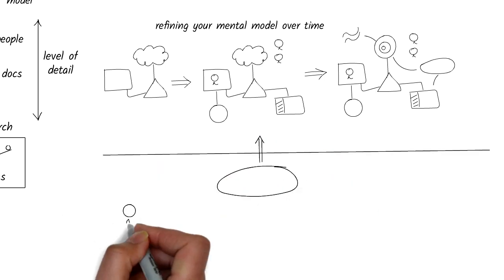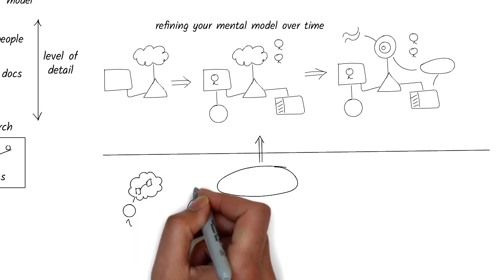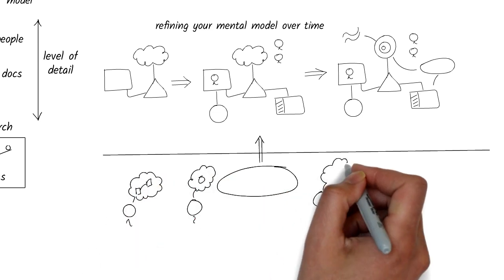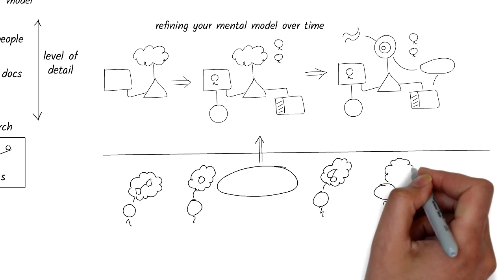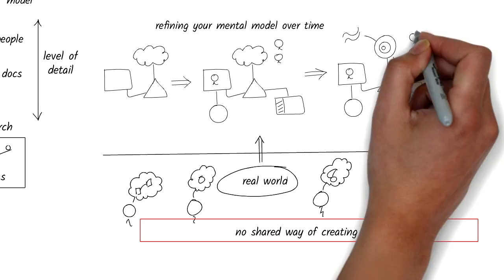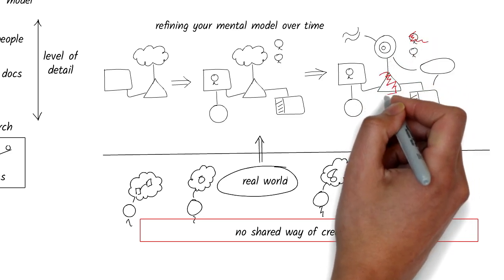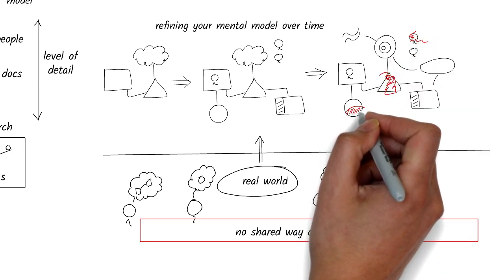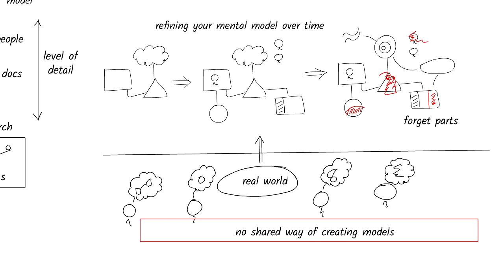The mental model you create in this process is what you use to understand the world. Most people create this mental model subconsciously. Our schools didn't teach us how to create effective mental models, so each of us ended up creating our own versions. When the mental model gets too complicated or complex, it's difficult to hold it all in our heads. Over time, we also tend to forget some parts of it and confuse the other parts.